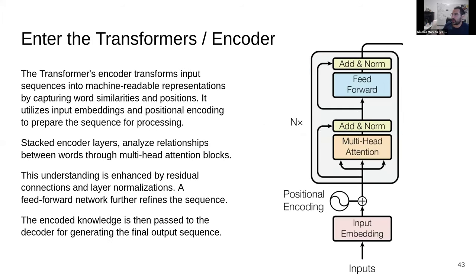So what is the transformer, why is it special? The transformer, it has two parts, an encoder and a decoder. The encoder transforms the input sequences into machine readable representation by capturing not word similarities, token similarities, and position. For those not in an NLP space, token is like a part of a word, maybe two or three letters. The highest resolution you can go is letter by letter, usually it's two or three letters together. It utilizes input embeddings and positional encoding to prepare the sequence for processing. You stack this as high as you can go, analyze the relationship between tokens through multi-head attention blocks, and you get the encoding.